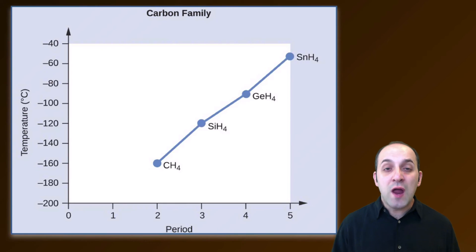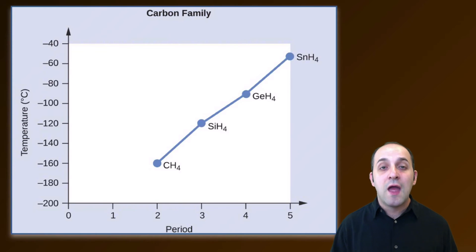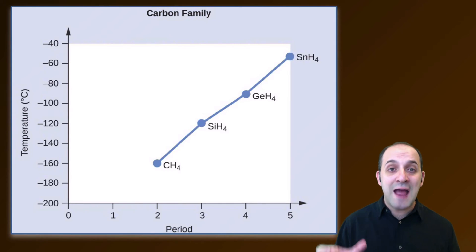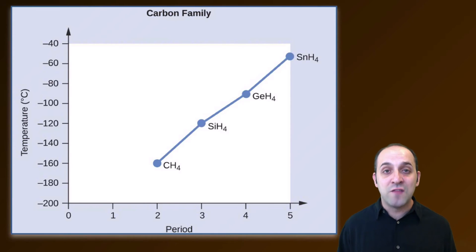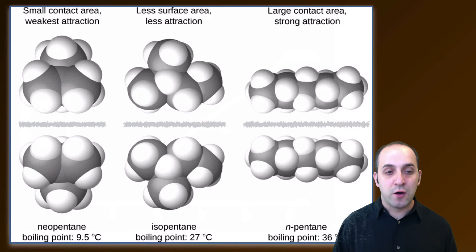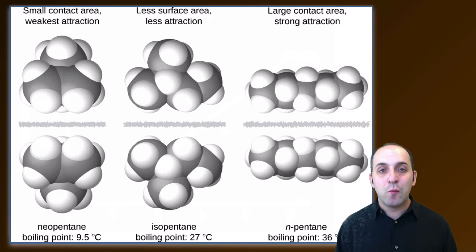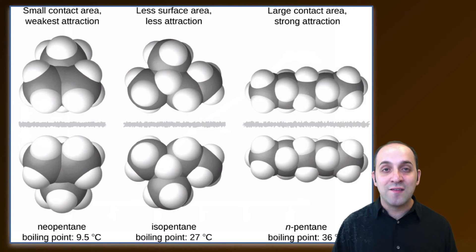This graph shows the strength of London dispersion forces, as represented by the boiling points, of four different molecules that all have the general formula XH4, where X is a successive member of group 14 on the periodic table. So we're going down the group as we go from left to right on this chart, and you can see that the boiling point of these four substances increases as we do that. The strength of the London dispersion forces is getting greater as the size of that central atom increases. We can also see this by increasing the surface area of the molecule — our boiling points increase due to that increased surface area, leading to increased London dispersion forces.